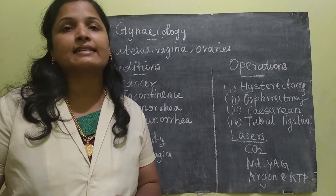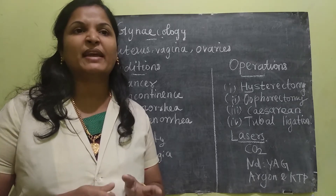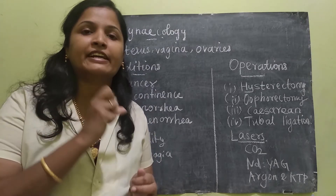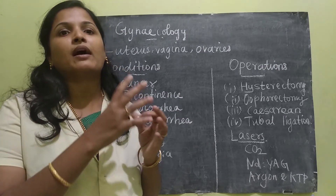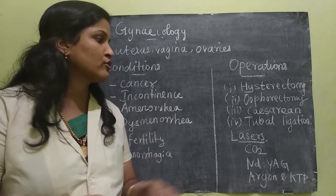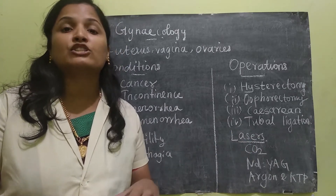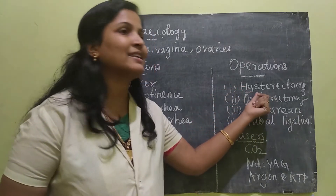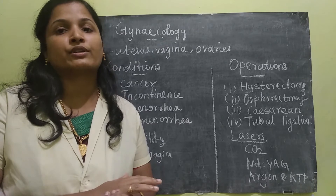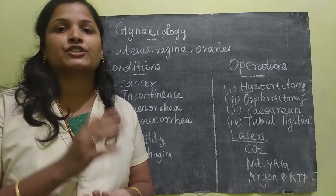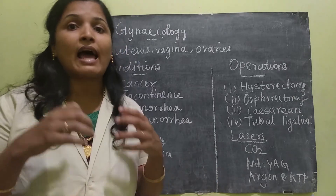CO2 lasers are useful in colposcopic procedures — a procedure that identifies the presence of any cancerous tissue over the path of the reproductive system. CO2 lasers are also used for hysteroscopy, which means viewing the inner part of the uterus in order to find any dysfunctions.